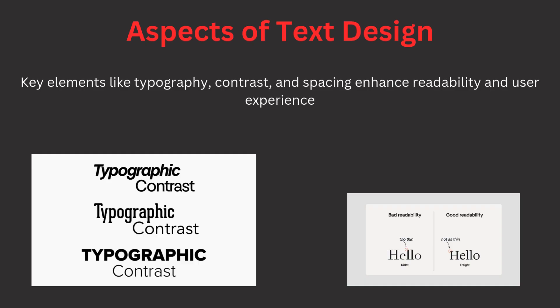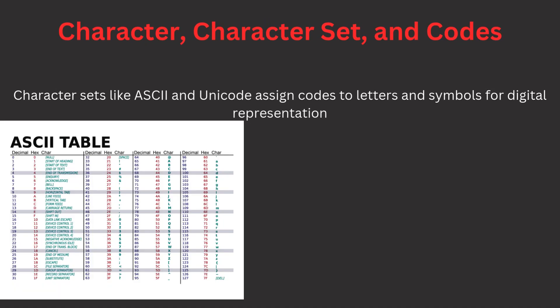Now, character sets and codes. A character is any letter, digit, or symbol used in text — text is simply a collection of characters. To represent text digitally, computers use character sets like ASCII or Unicode, which assign a unique code to each character. ASCII is a seven-bit code that covers basic English characters, while Unicode supports a much broader range including symbols and characters from multiple languages. Character sets are crucial for the proper representation of text in different systems, ensuring text appears correctly across various platforms and devices.